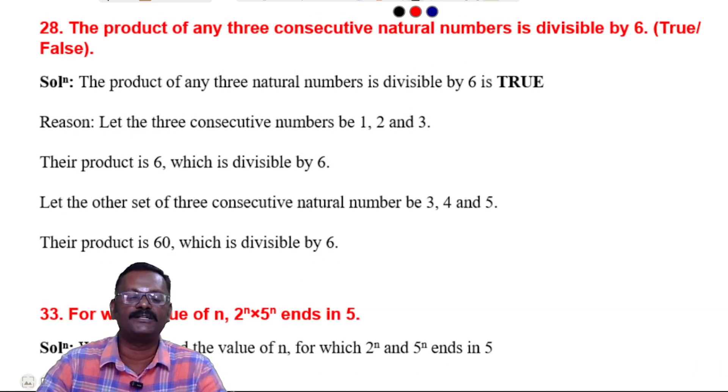28th question: The product of any three consecutive natural numbers is always divisible by 6, true or false? The product of any three natural numbers divisible by 6 is true.